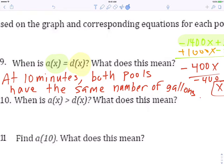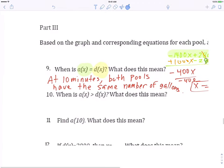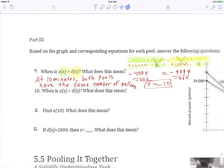And you could find that number by substituting 10 into each equation. But I'm not going to do that. So, when is a of x greater than d of x? What does this mean?